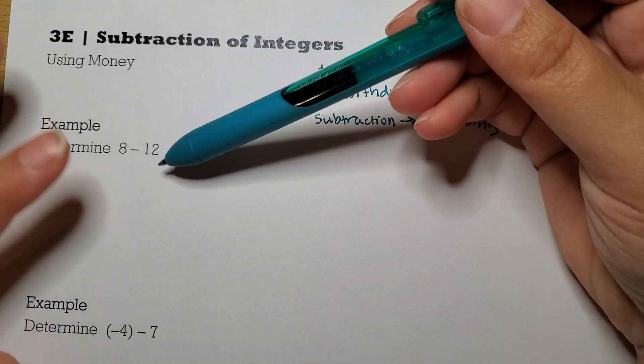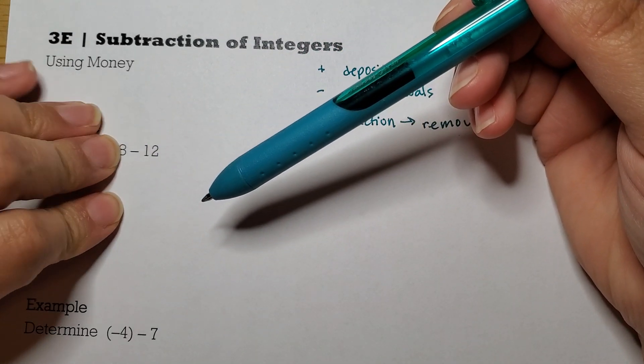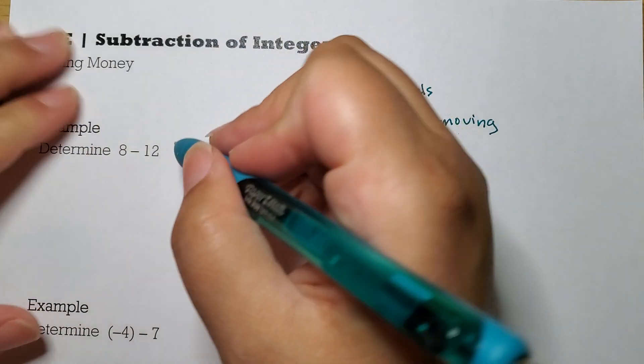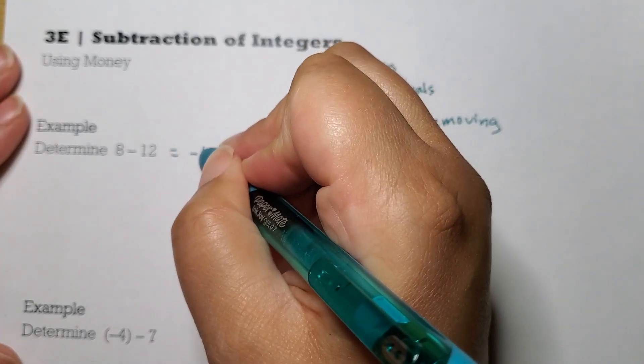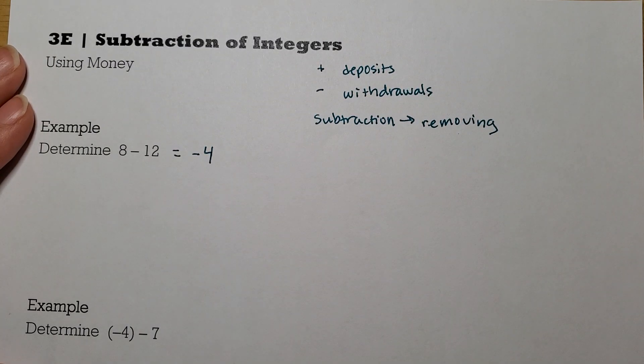So how much over did I go? Well, I took out $8, $9, $10, $11, $12, so $4. So $8 minus $12 is a negative $4, because I've taken out more than I had in there.